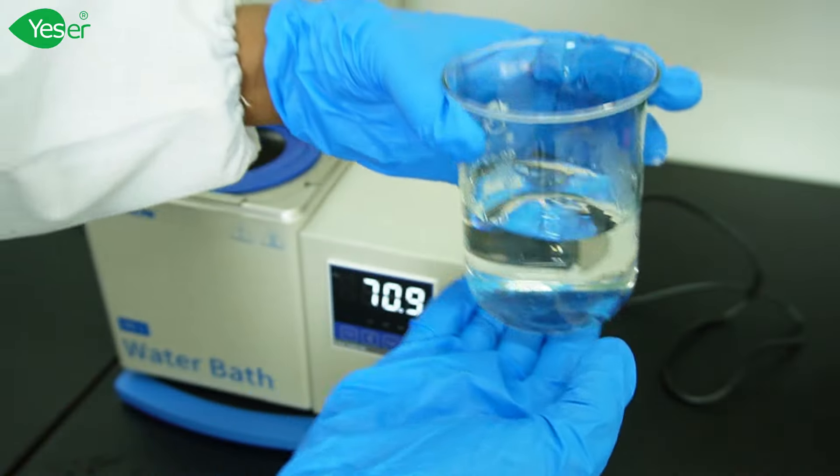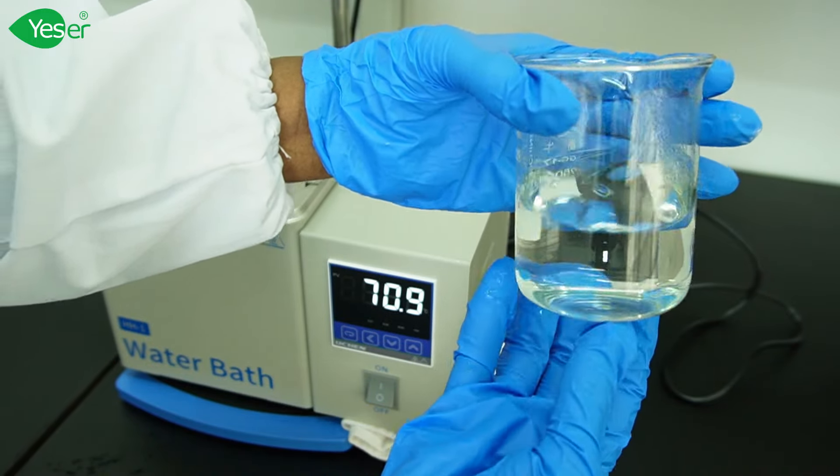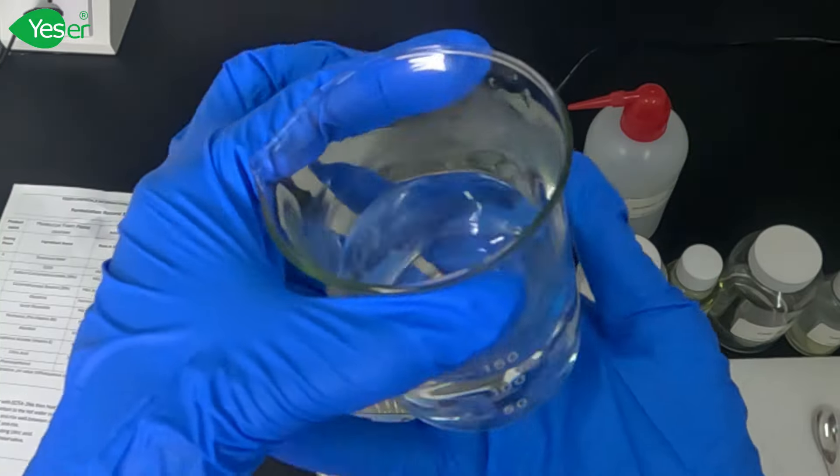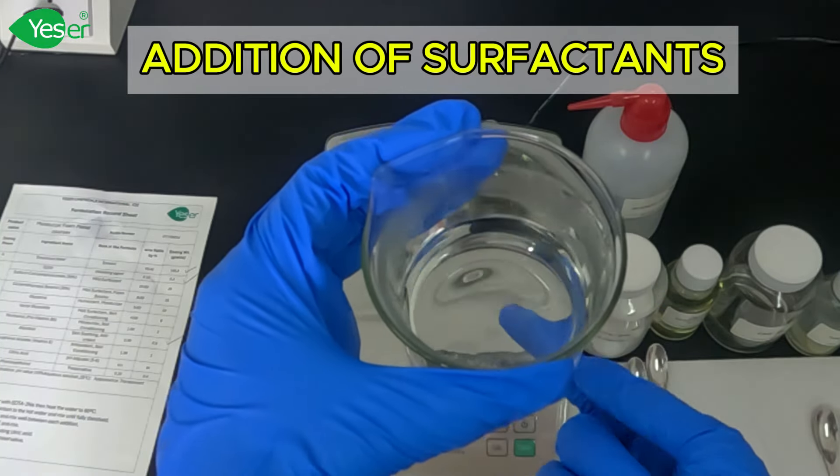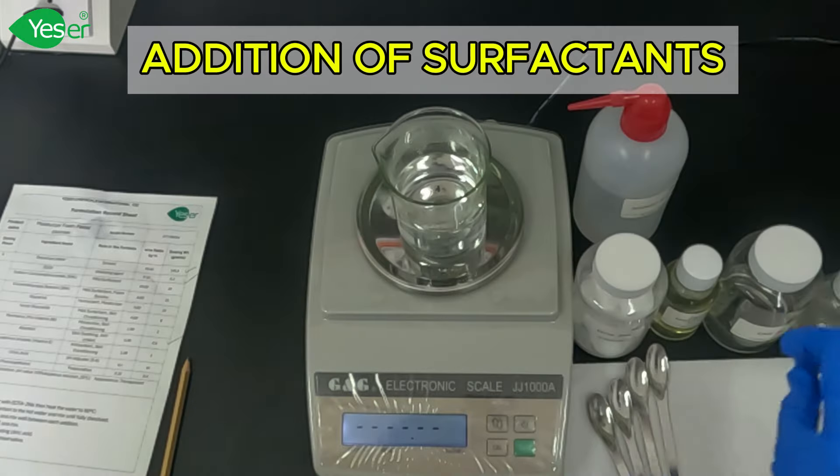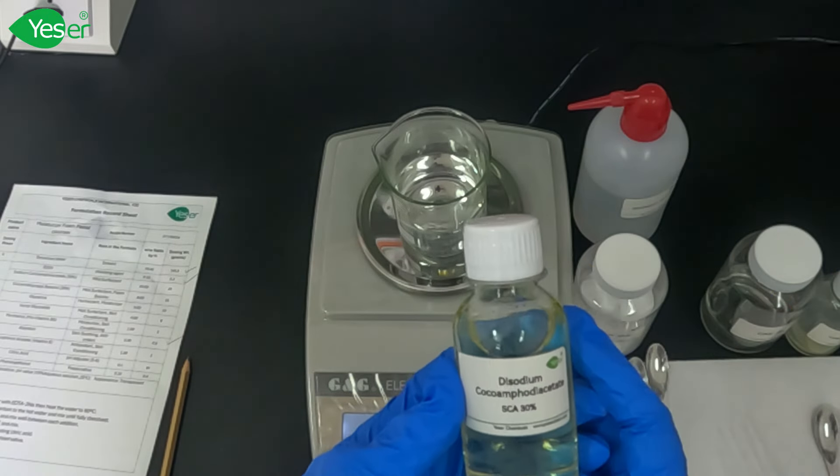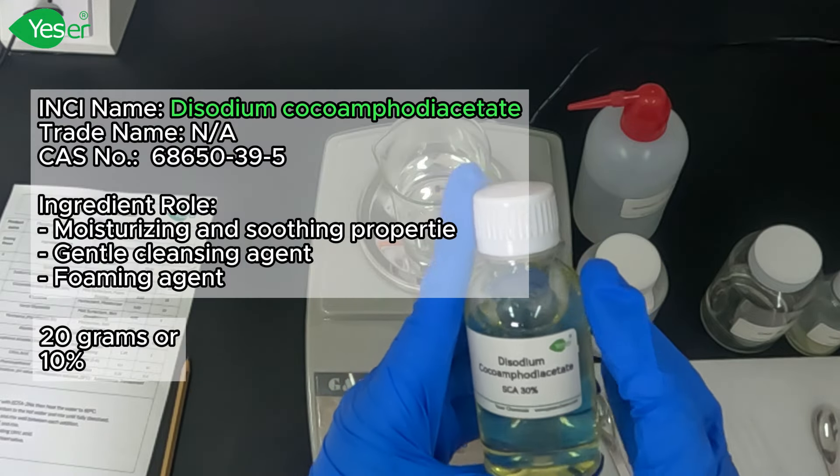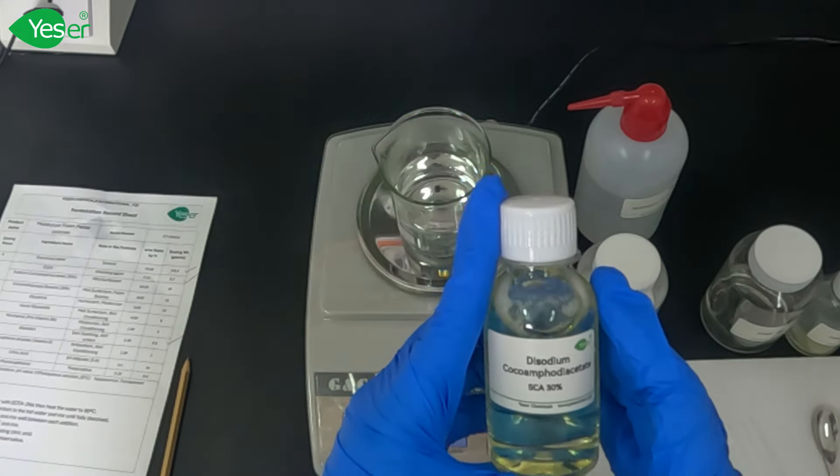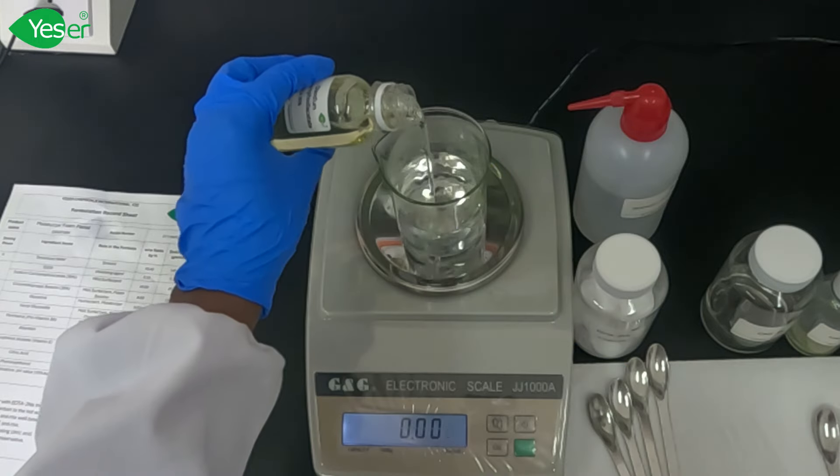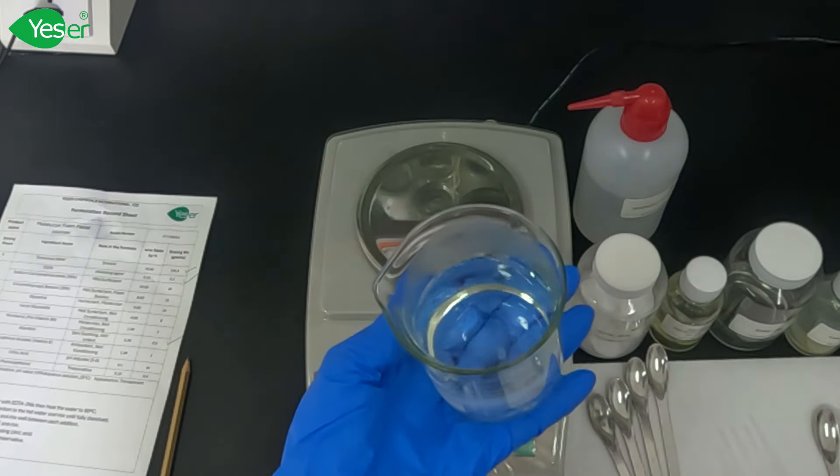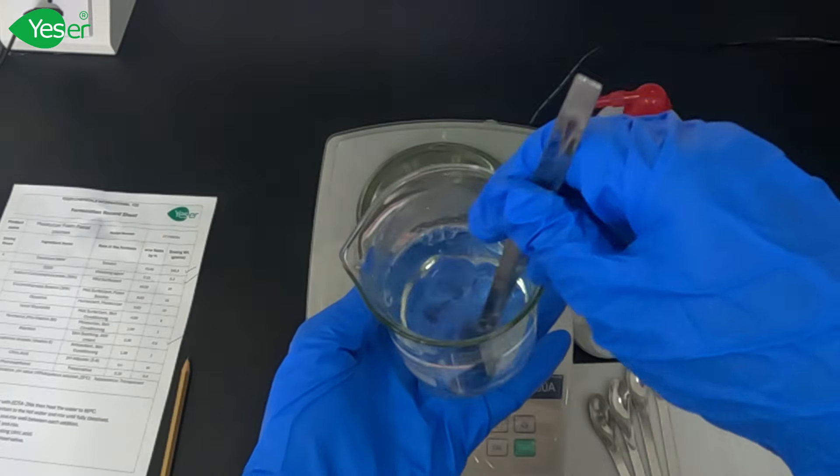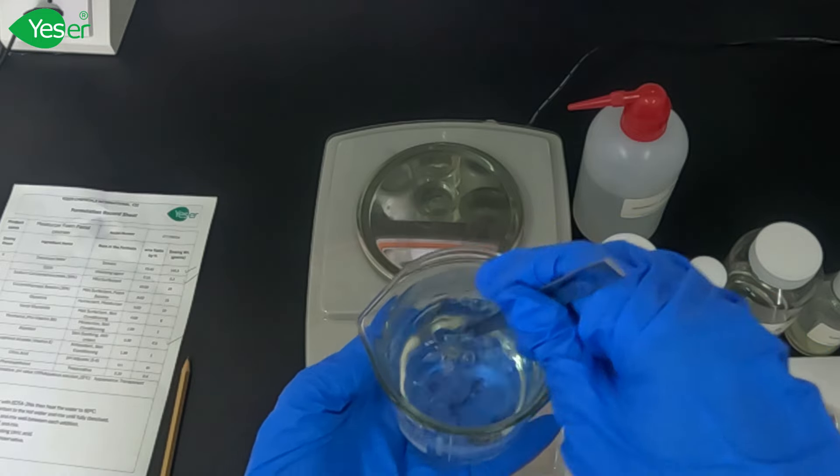Now after our moisturizer agent is fully dissolved and mixed, we're going to go further to the next stage. We can proceed and start adding our surfactants. We're going to start with our first surfactant, SCA 30%. From this one, we need 10% of the formula ratio, so that's equivalent to 20 grams. We're going to mix it just using a spatula.